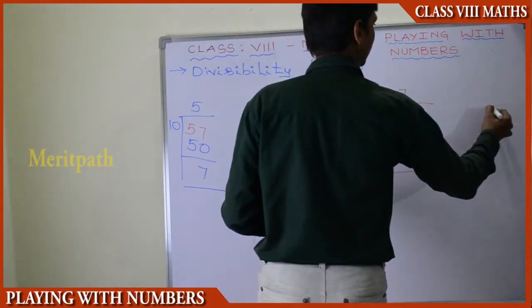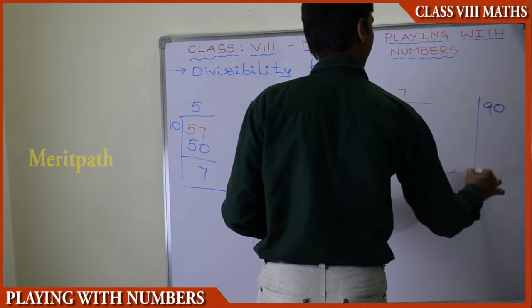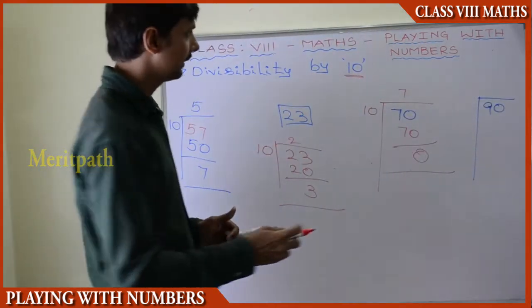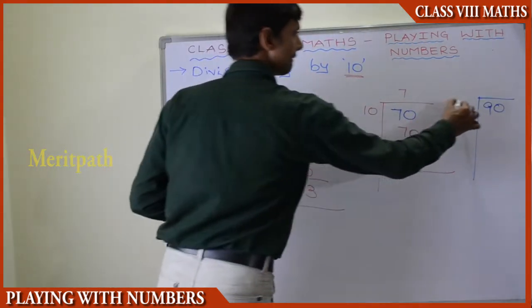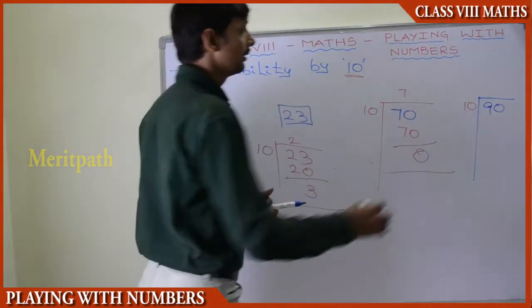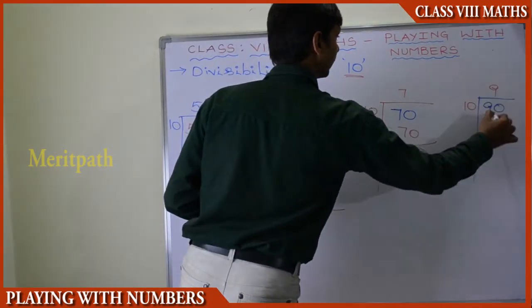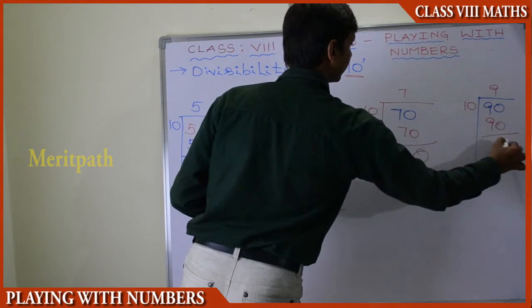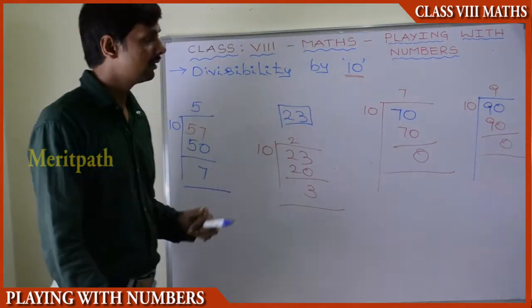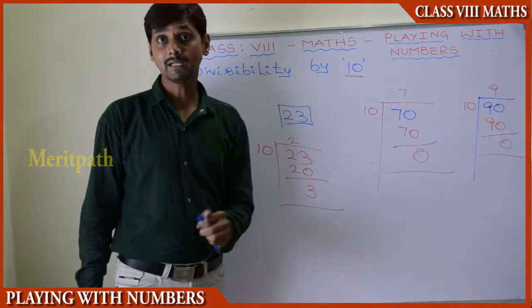Let us take 90 and divide by 10. We get 9 times 10 is 90, so we get remainder 0. Therefore, 90 is divisible by 10.